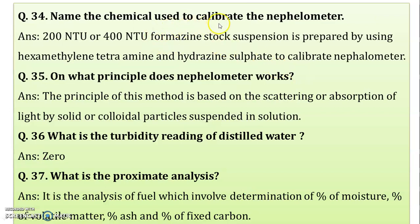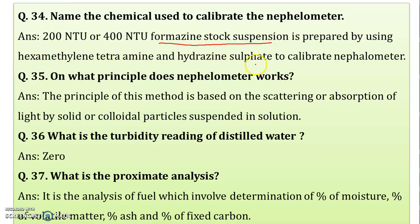Name the chemical used to calibrate the nephelometer. The chemical is formazine stock suspension. It is prepared using hexamethylene tetramine and hydrazine sulfate. This standard of 400 NTU or sometimes 200 NTU is used to calibrate the nephelometer.